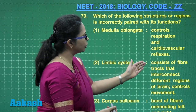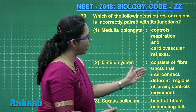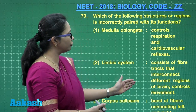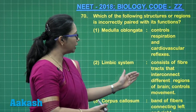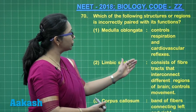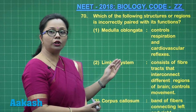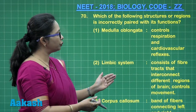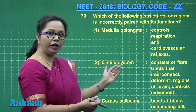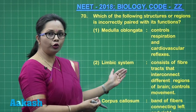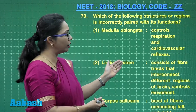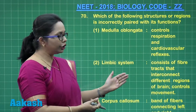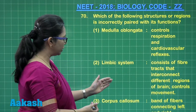The second option states that the limbic system consists of fiber tracts that interconnect different regions of the brain and controls movement. This is incorrect because the limbic system is our emotional brain, responsible for various types of emotions like fear and rage, but it has nothing to do with movement.